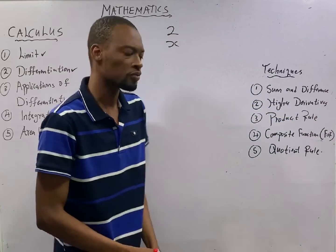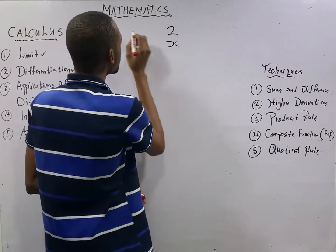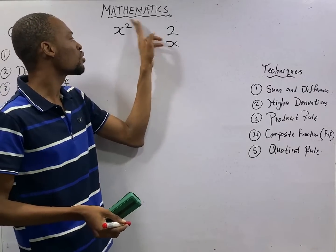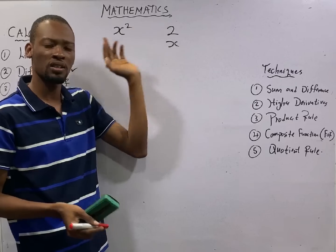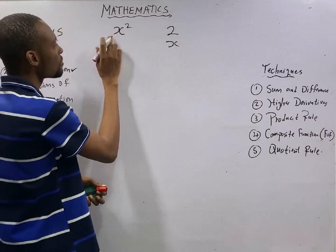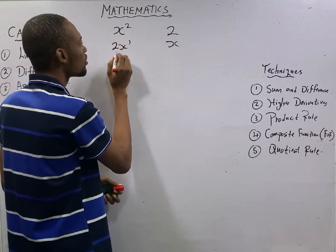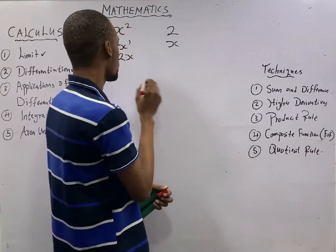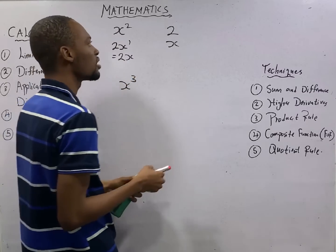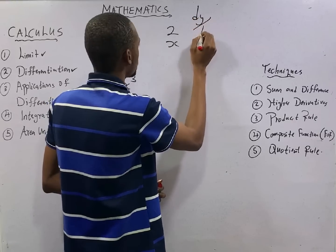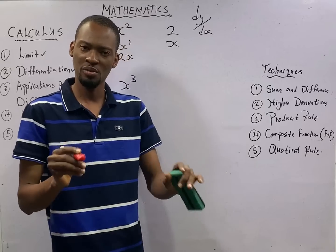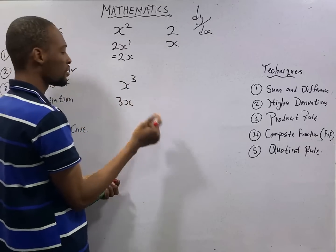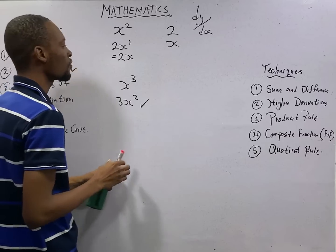For an exponential function: if I give you s squared and say differentiate, you simply use the power to multiply the function and subtract one from the power. We get 2 times s, which is 2s, and 2 minus 1 gives power of 1, so the answer is 2s. If I give you s raised to the power of 3, the result is 3s squared.